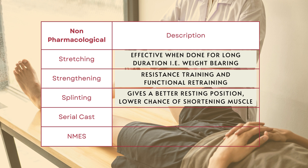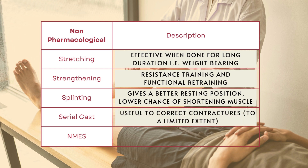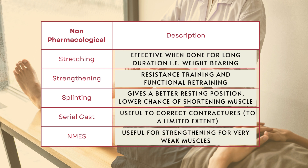Splinting and serial casting help in reducing the chance of contracture, and in the case of serial casting, to reduce the contracture from getting worse or even correct it to a certain extent. Lastly, we have NMES. NMES is also a form of strengthening exercise, and when combined with Botox injections, it can be very helpful in reducing spasticity. For patients who have very weak upper or lower limbs, NMES is a good way to start strengthening.